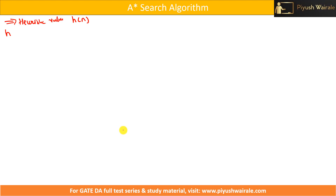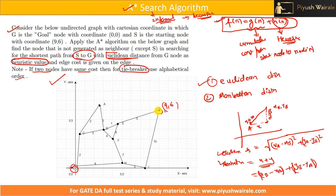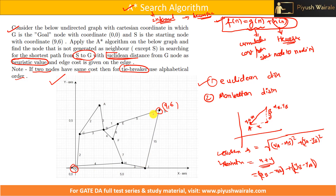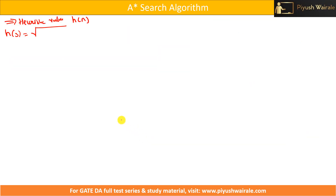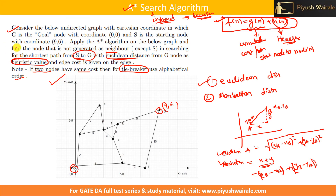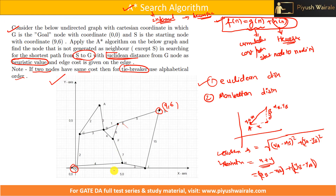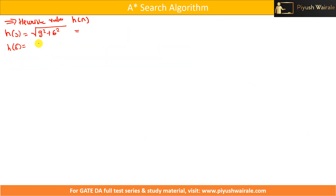We will find the heuristic value h(n) for each node. For h(s): s is at (9,6), so it is the square root of 9² + 6². For h(E): E is at (4.5, 4.5), so it is the square root of 4.5² + 4.5². For h(I): I lies on the x-axis at 7.5, so h(I) = 7.5.